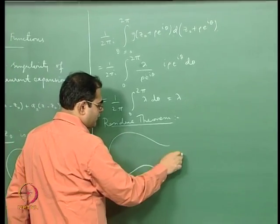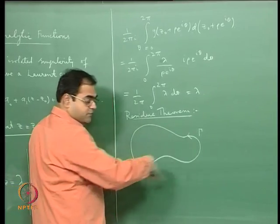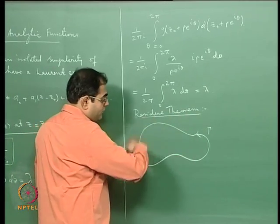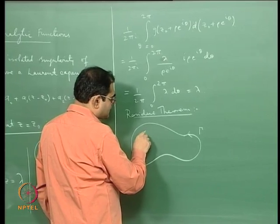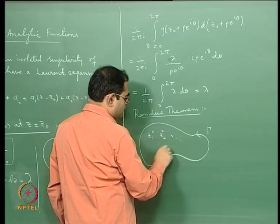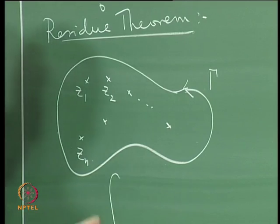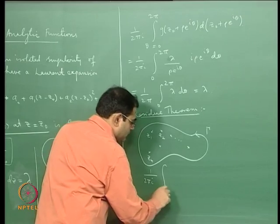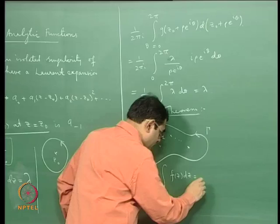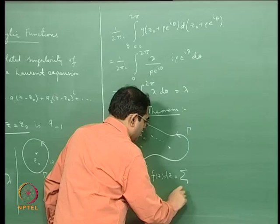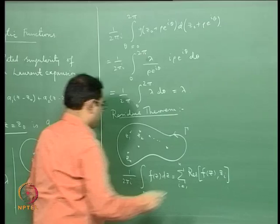You have a nice contour and a function f defined on a domain containing this contour and its interior. Assume there are several isolated singularities z1, z2, ..., zn inside. Then (1/2πi) ∫_γ f(z)dz equals the sum from i=1 to n of the residue of f(z) at zi. This is the residue theorem.